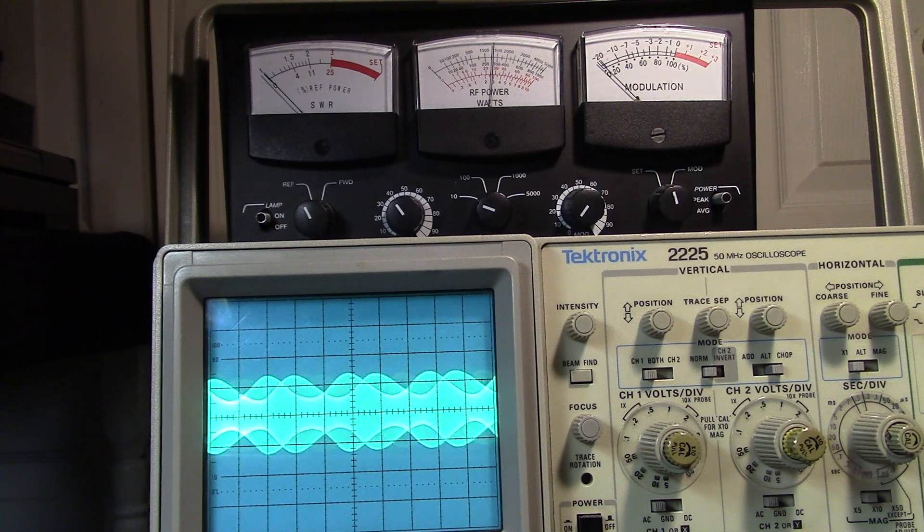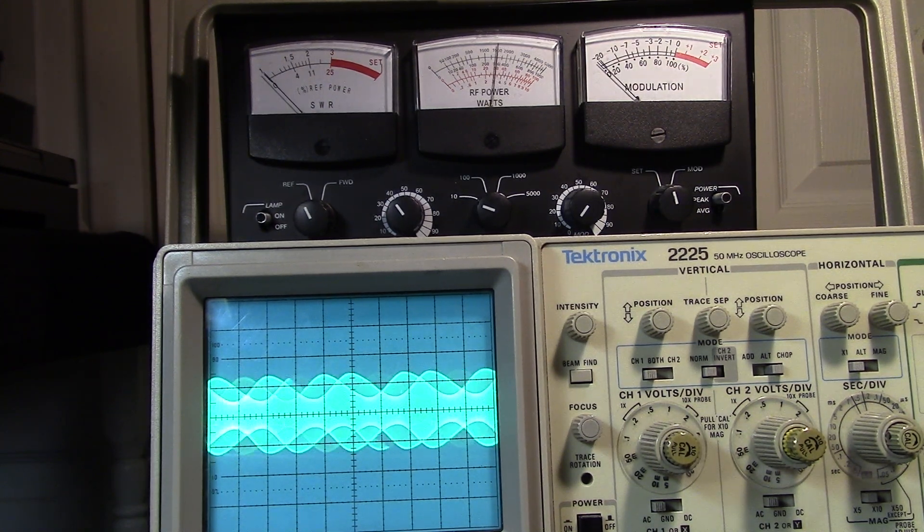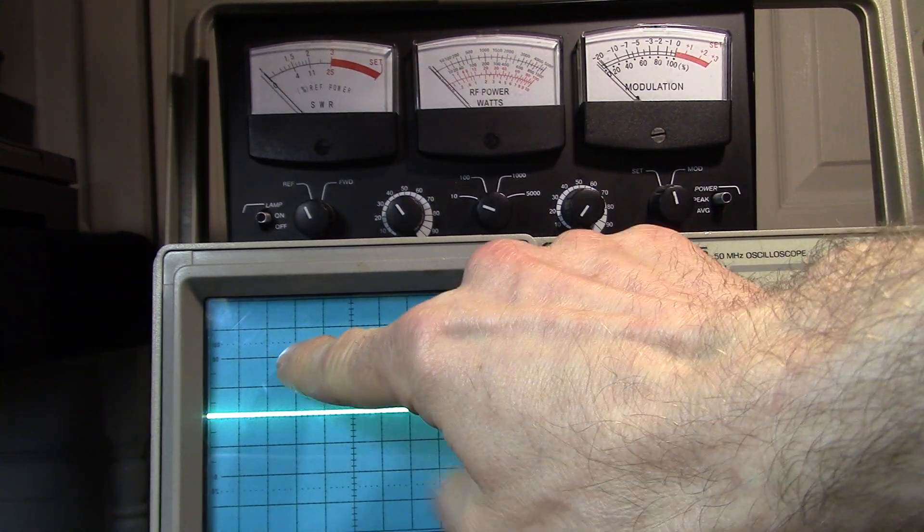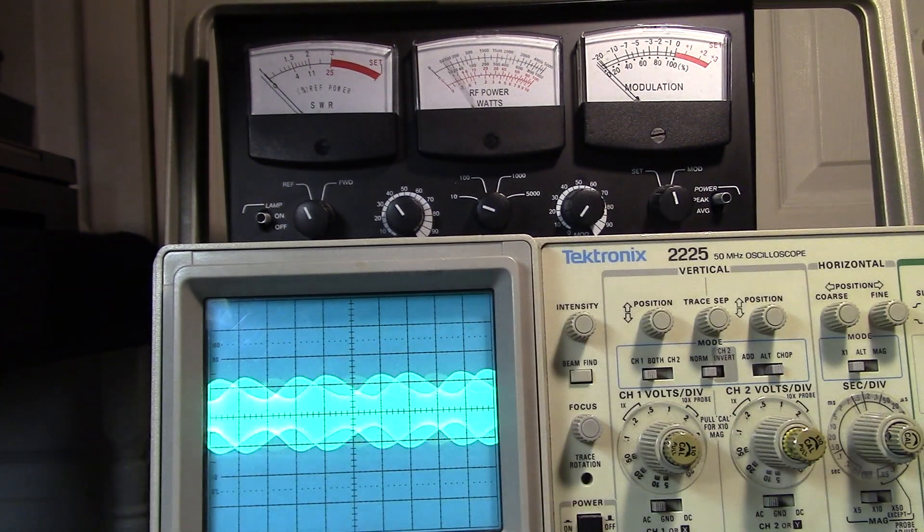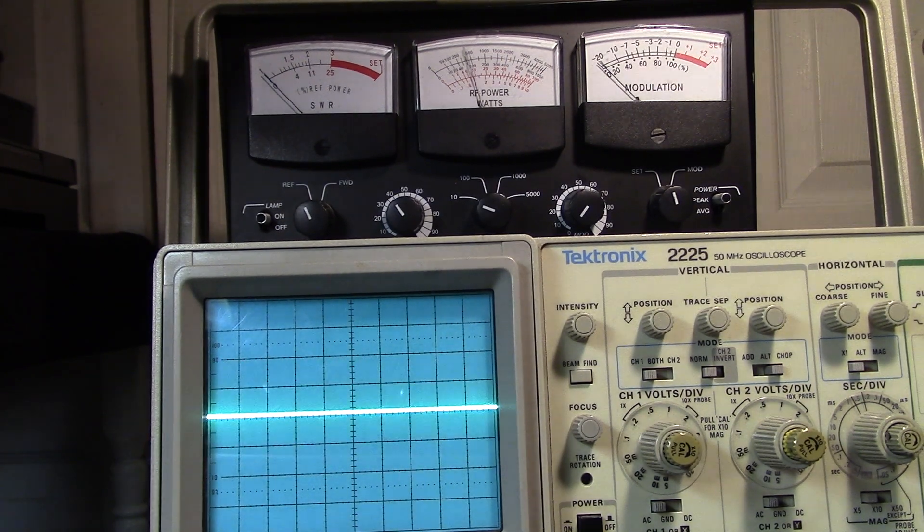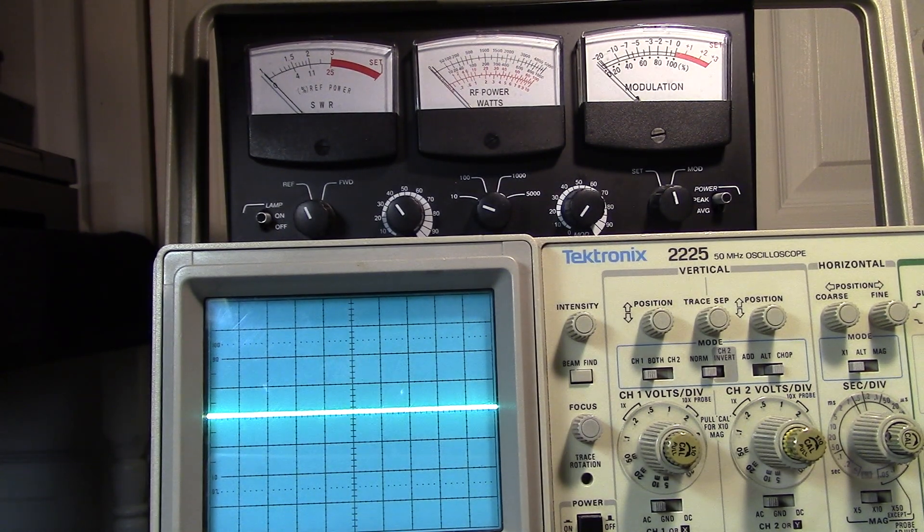Bring that down. Again, up top our positive peaks are up here. When it narrows down, our negative peaks are down there. 100% modulation right there.